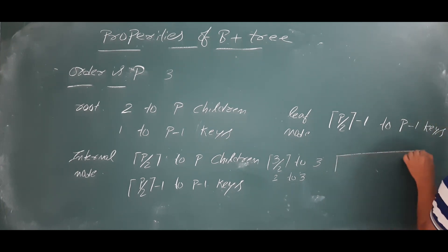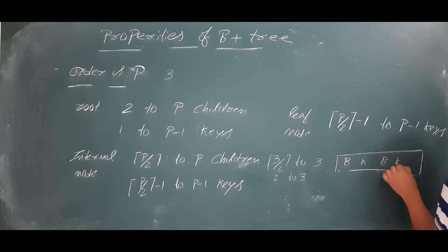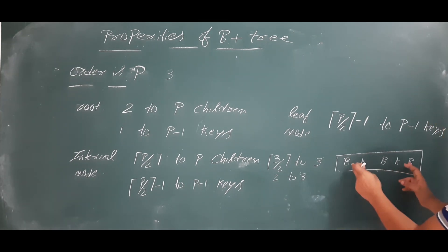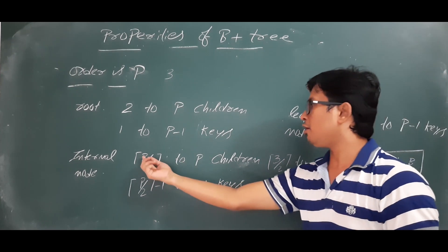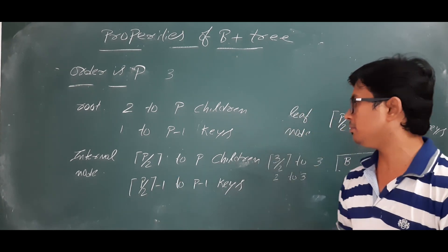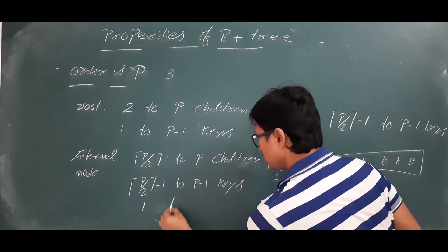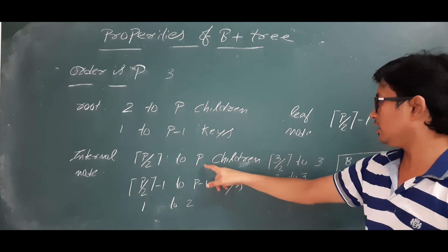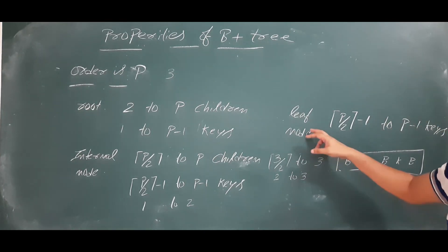Looking at the leaf node structure, it consists of: block pointer, key, block pointer, key, block pointer — where the block pointer acts as a chain. So if you have three chains you will have only two keys. If you have ⌈p/2⌉ children, you will have ⌈p/2⌉ minus one keys as the minimum and p minus one keys as the maximum. With p equals three, minimum is one key and maximum is two keys.